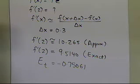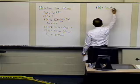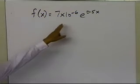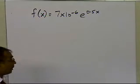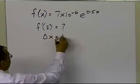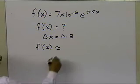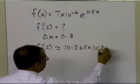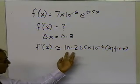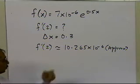Now let's go ahead and take another similar example. Somebody might say: if you had the function 7 times 10 to the power minus 6, e to the power 0.5x — this function is very similar to what we had earlier, the only difference is that we have 10 to the power minus 6 being multiplied. If you calculate f prime of 2 using the same approximate formula with delta x equal to 0.3, you're going to get f prime of 2 approximately equal to 10.265 times 10 to the power minus 6.